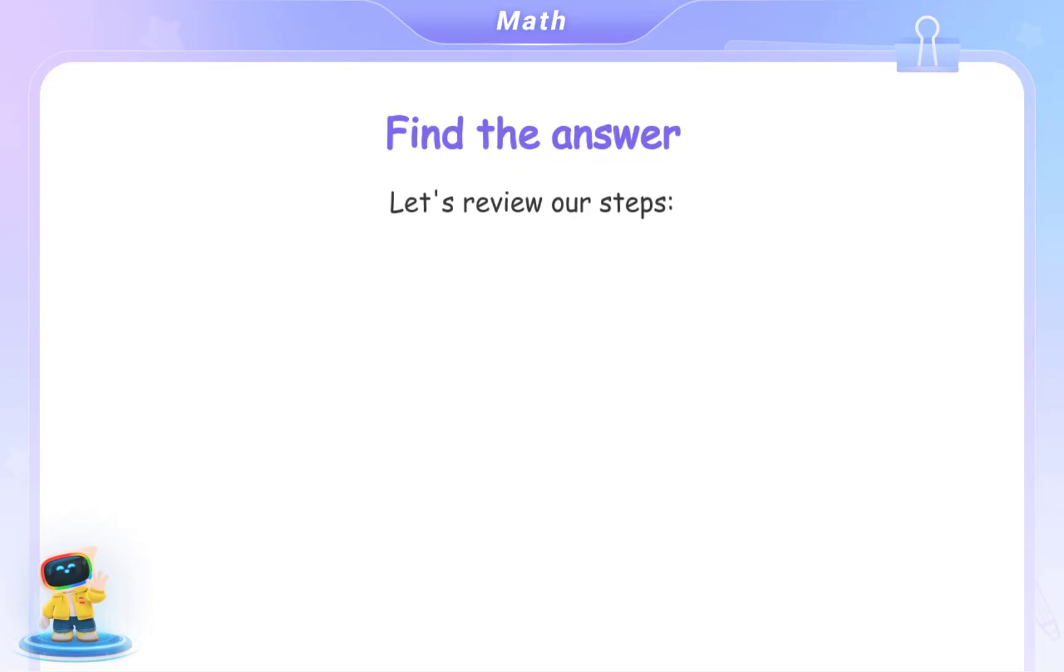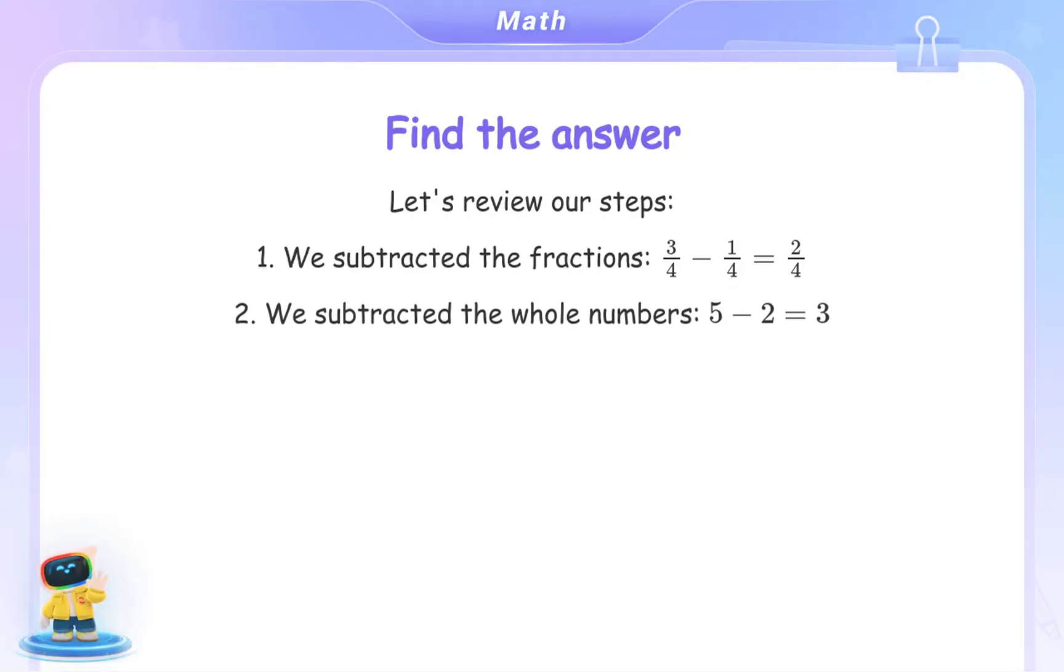Find the answer. Let's review our steps. First, we subtracted the fractions, 3 fourths minus 1 fourth equals 2 fourths. Then, we subtracted the whole numbers, 5 minus 2 equals 3. Finally, we simplified 2 fourths to 1 half. Therefore, the answer is 3 and 1 half.